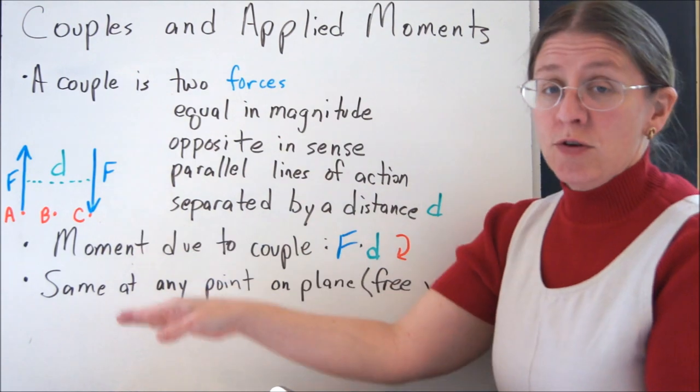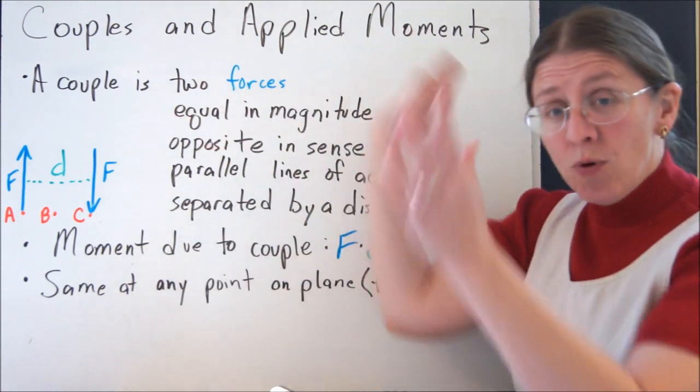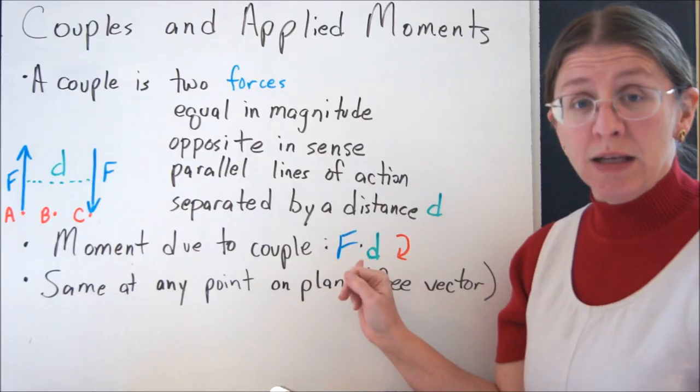So what you're going to see is, not only for those three points, but you can do it for any point on the plane, and you'll end up with the same thing, F times D clockwise.